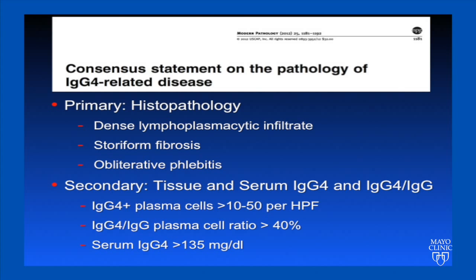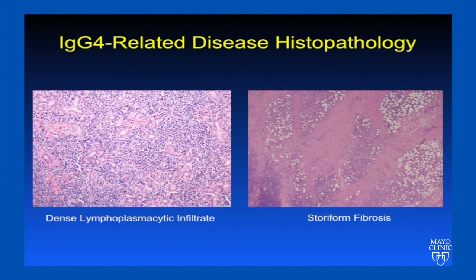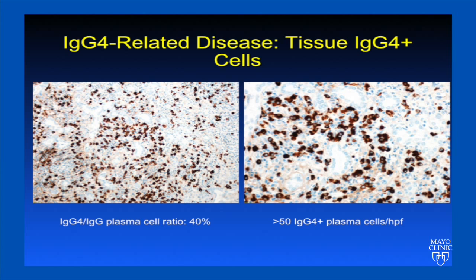Because of the difficulty making the diagnosis based on serum IgG4 levels, the primary diagnosis is made based on histopathology. Changes can include a dense lymphoplasmacytic infiltrate, storiform fibrosis, and obliterative phlebitis, although the latter is rarely seen in orbital disease. Secondary diagnostic criteria are tissue and serum IgG4 levels, and IgG4 to IgG levels. This slide shows typical histopathology from orbital specimens: on the left is the dense lymphoplasmacytic infiltrate, and on the right is an example of storiform fibrosis. The IgG4 immunostain shows an IgG4 to IgG plasma cell ratio greater than 40%, and more than 50 IgG4-positive plasma cells per high power field.